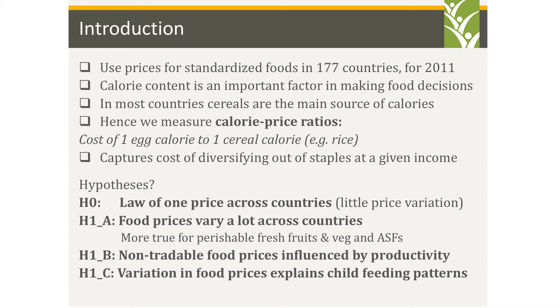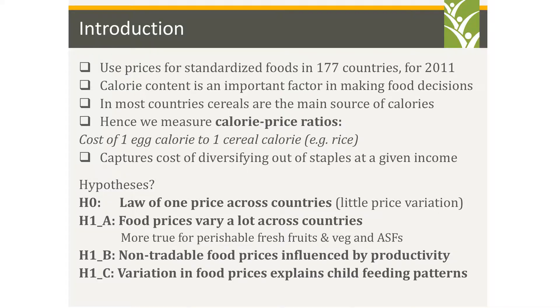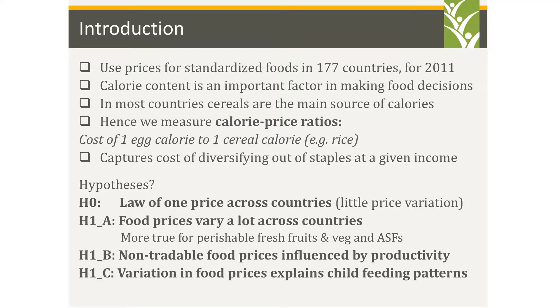Our hypotheses: the first is what economists call the law of one price — like most economic laws, nobody thinks it holds — which says that without transaction costs there'll be no price variation across countries, so it wouldn't matter if you were in Nepal or the US, the price of milk relative to cereals would be the same. The alternative is that food prices vary a lot across countries, more so for foods that can't be traded, like perishable fruits, vegetables, and animal-source foods. A second hypothesis is that non-tradable food prices should be influenced by local productivity. A further hypothesis is that variation in food prices explains child feeding patterns and maybe stunting.